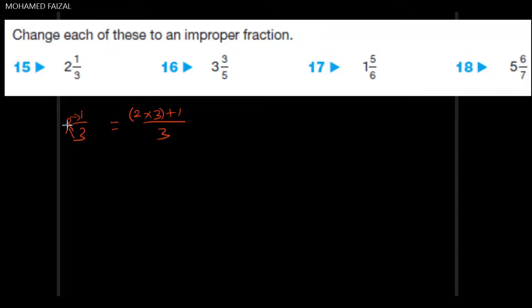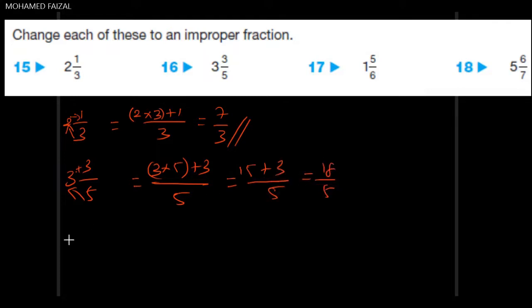We have to multiply these two and add with the numerator. So it will become 2 into 3, 6 plus 1, 7 by 3 is the fraction. Similarly, 3 into 5 plus 3 divided by 5. 3 into 5, 15 plus 3 by 5 equals 18 by 5 is the fraction.